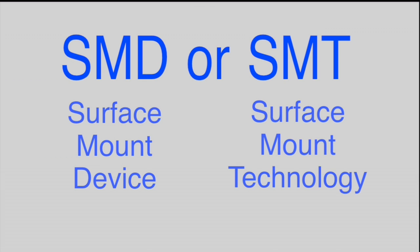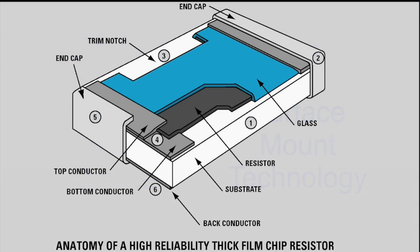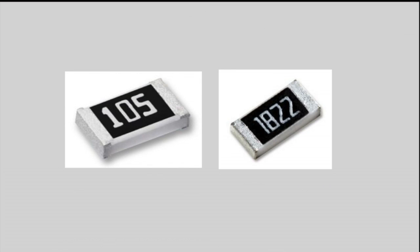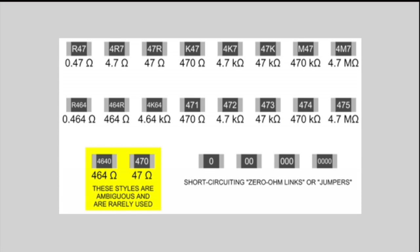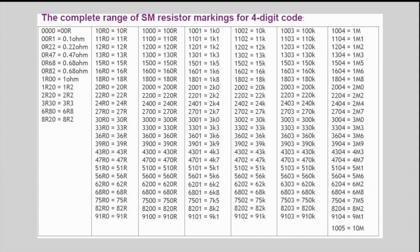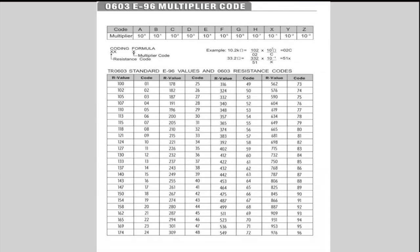SMD or SMT surface mount devices are the tiny little resistors that you find in a lot of modern-day things. The trouble is there are many different ways that they display the values. Some have three symbols, some have four symbols, and then you get some that are called E96. As you can see by this chart, just look on the internet because there are too many ways to display these.